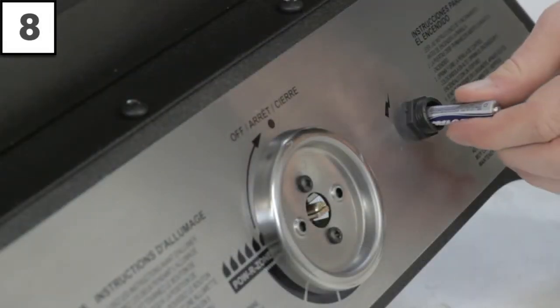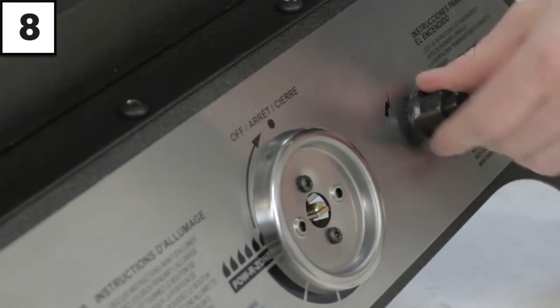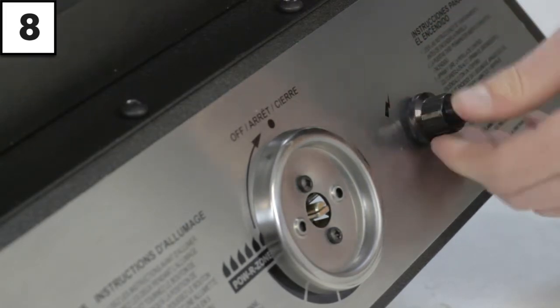Step 8: Install the AAA battery in the electronic igniter and reinstall the igniter cap. The positive terminal should be facing out.